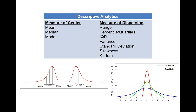The measure of dispersion tells us how the data is distributed. We have the range information, which requires the min and max of the data. Then we can calculate percentiles or quartiles, and using that we can calculate the interquartile range. We can also calculate variance and standard deviation.